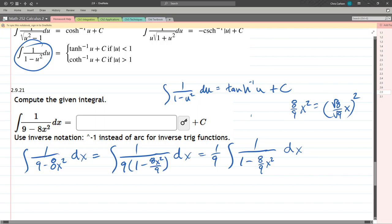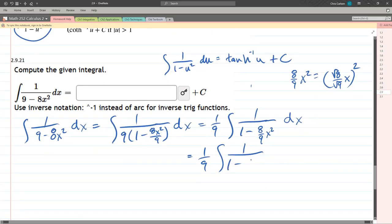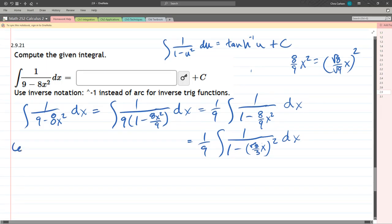Of course, square root of nine is three. So we'll rewrite this integral: one over one minus square root eight thirds x, whole thing squared dx. All right, now we're actually in the right form.